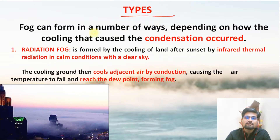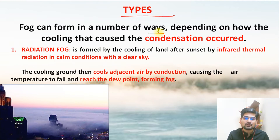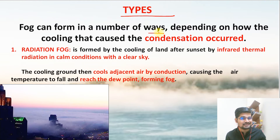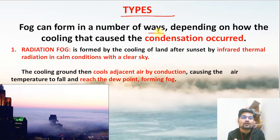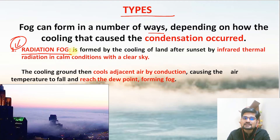Fog can be formed in a number of ways, and depending upon how the cooling and condensation happen, there are different types of fog. Types of fog depend upon the process of condensation — that is, in what ways this hanging air-cloud is formed near the surface of the Earth. The first type is formed because of radiation and is called radiation fog.